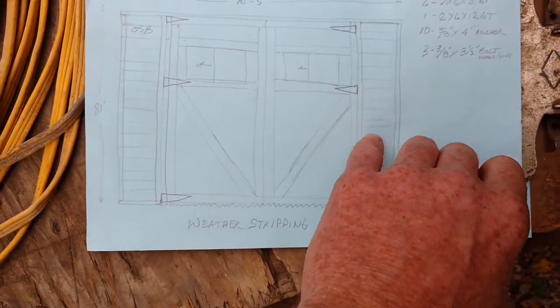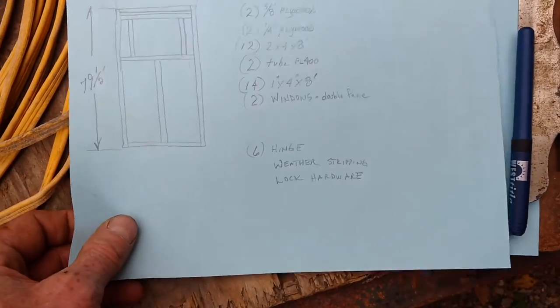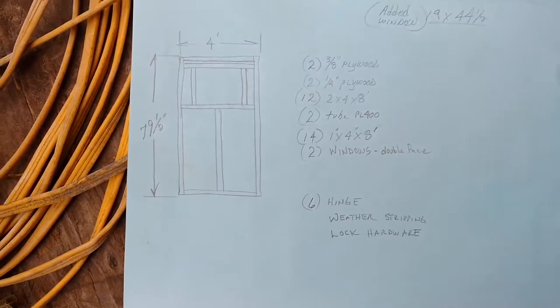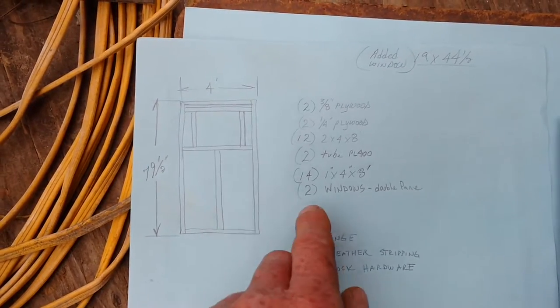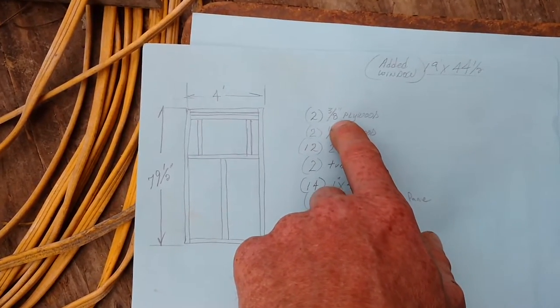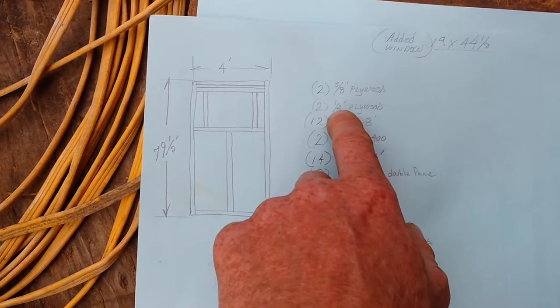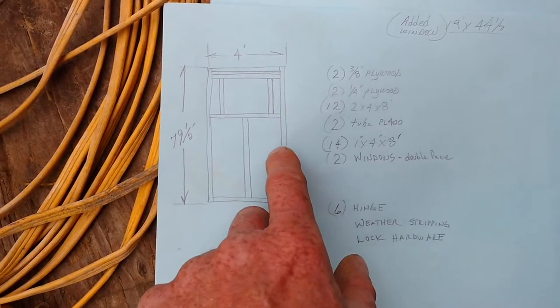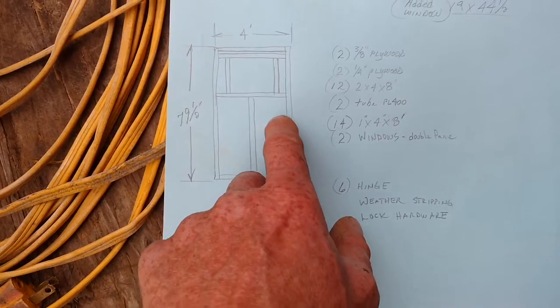And as far as the doors go, the construction of the doors is going to be pretty basic and simple. On the outside I'm going to use 3/8 plywood. On the inside I'm going to use 1/4 inch plywood. And as I mentioned before I'm going to take the 2x4, make a 2x4 frame here.